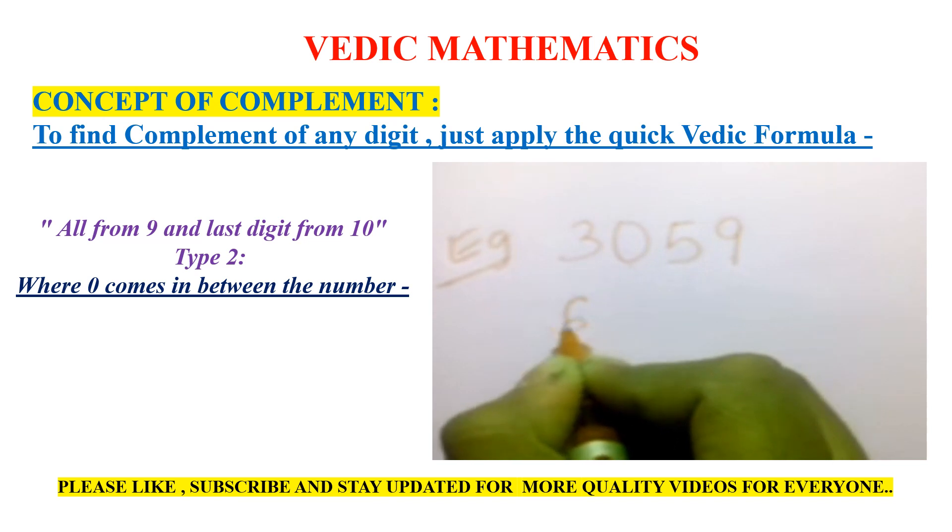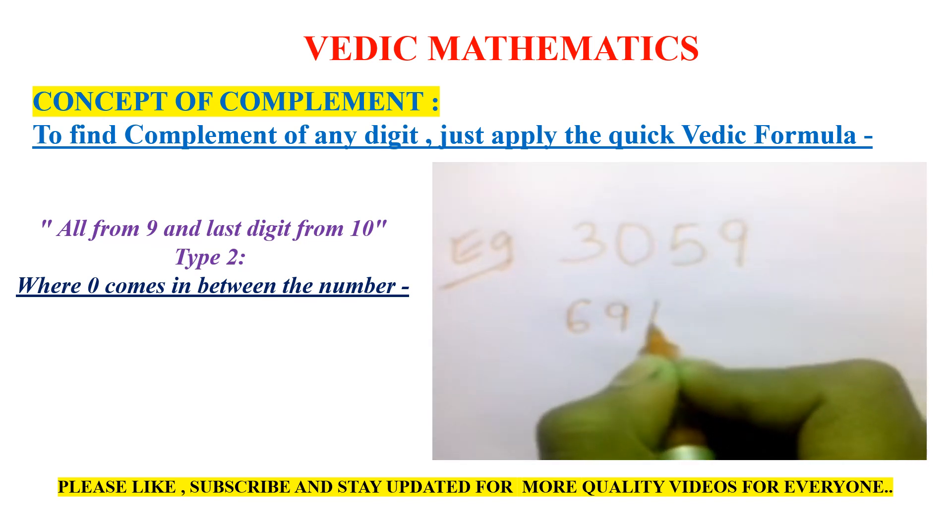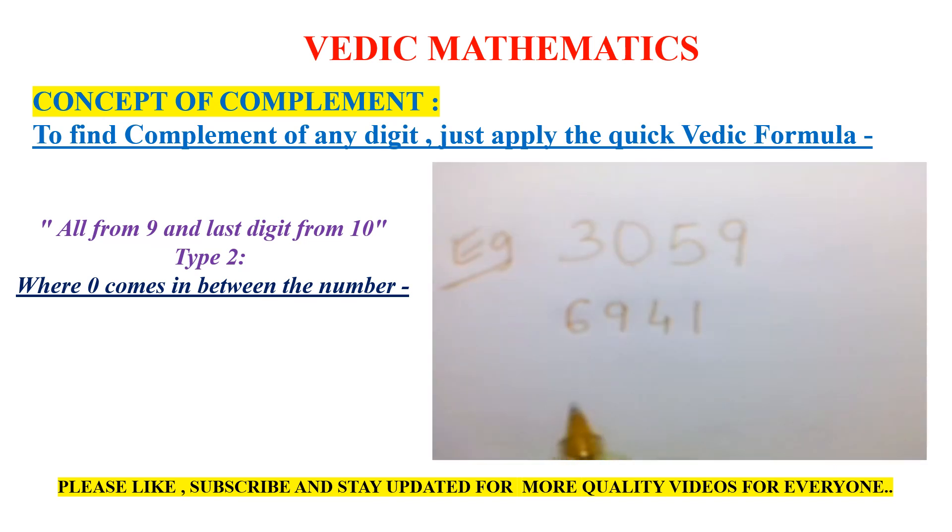So the complement would be 6, 9, 4, and 1. Your complement for this would be 6, 9, 4, 1.